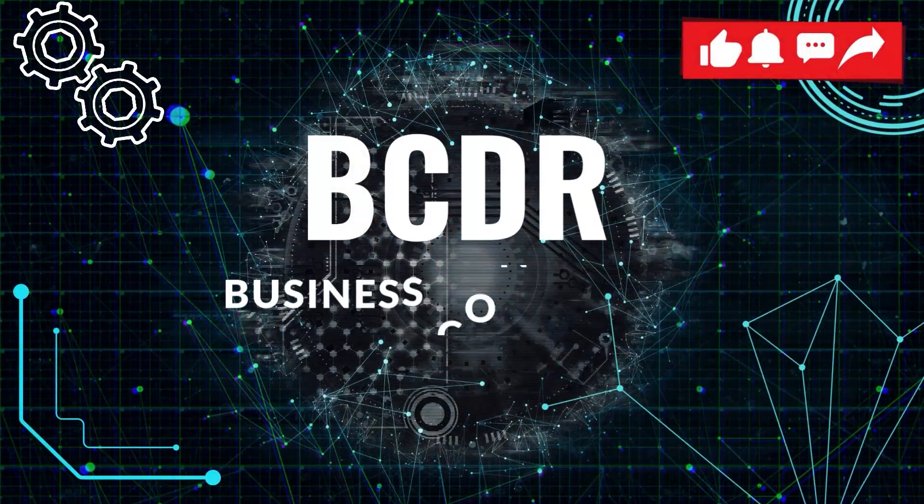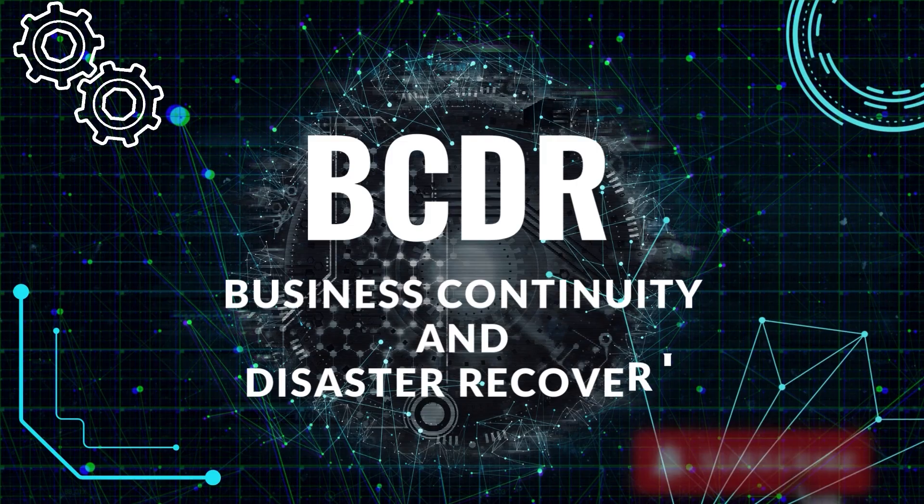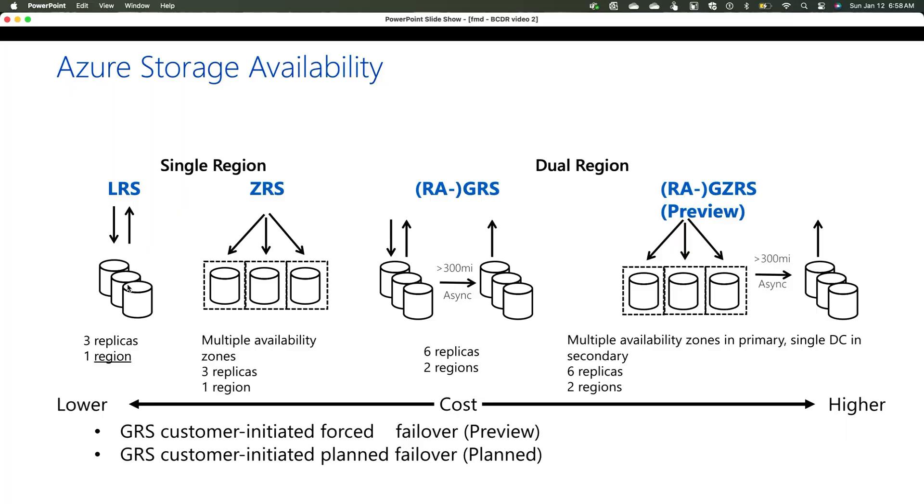Hey everybody, Freddy here with another video. This is video number two in the series of BCDR — Business Continuity and Disaster Recovery. Today we're going to be focusing on Azure storage, primarily talking about blob and the different options you have such as LRS and GRS, and focusing on private endpoints and what happens when a disaster hits while using GRS.